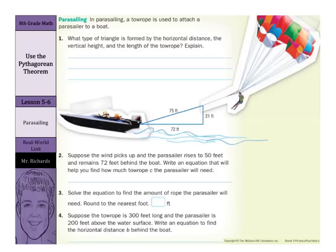Number one, what type of triangle is formed by the horizontal distance, the vertical height, and the length of the tow rope? Well, that looks like a right triangle to me, as you can see this kind of right angle right there. So, let's call that a right triangle.